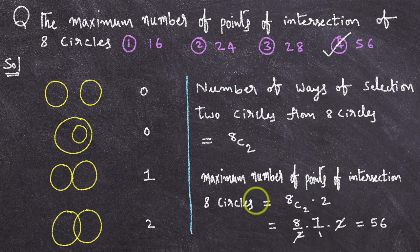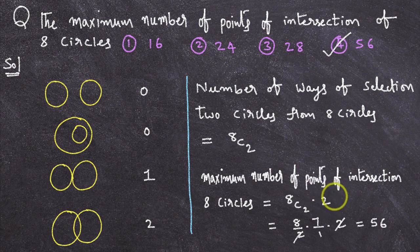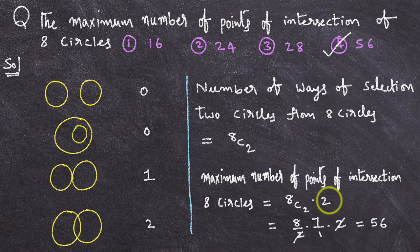Maximum number of points of intersection of 8 circles is 8C2 into 2. Why this 2? Because each pair of circles will give you 2 points of intersection.